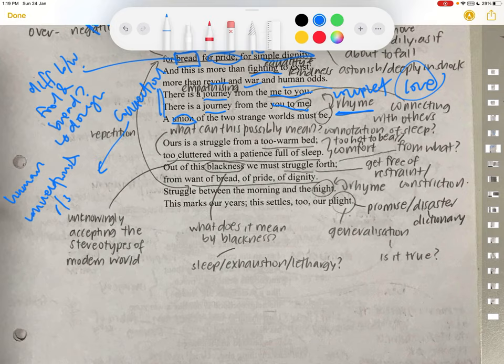Now we're going to move on to the next stanza, which is: Ours is a struggle from a too warm bed, too cluttered with a patience full of sleep. Out of this blackness we must struggle for, for want of bread, of pride, of dignity. Over here, ours is a struggle from a too warm bed. Ours is who? Who is it?